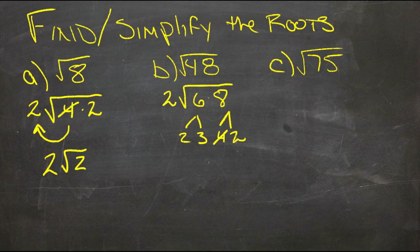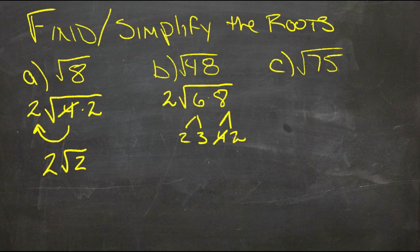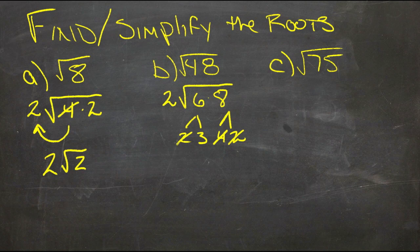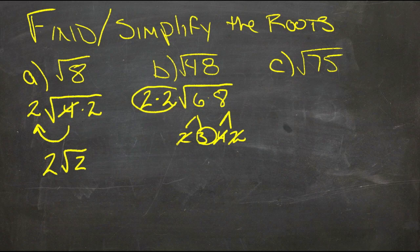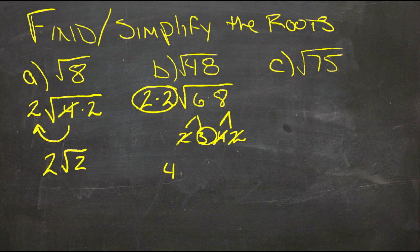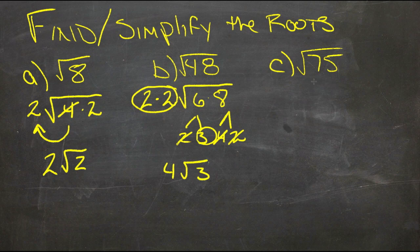And here we have 2 times 2, so that's the same as 2 squared. And when you take the square root of a square, they cancel each other out, so we get another 2 outside. So now we have just the 3 inside, and we have two 2's outside. So 4 roots of 3 is the simplified version.